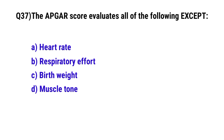Question number thirty-seven: The APGAR score evaluates all of the following except. The correct option is C, birth weight.